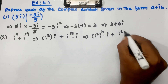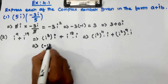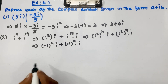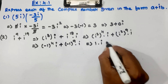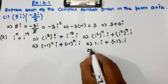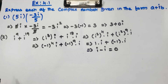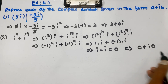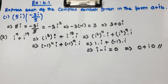i squared is minus 1. So we have minus 1 to the power 4 into i, plus minus 1 to the power 9 into i. Minus 1 to an even power is 1, so 1 into i plus minus 1 to the power 9. A negative odd power gives minus 1, so minus 1 into i. That gives i minus i, which equals 0. So the answer is 0 plus i times 0, which is the form of the given complex number.